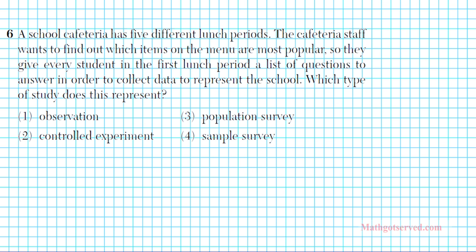In problem 6 it says the cafeteria has 5 different lunch periods. The cafeteria staff wants to find out which items on the menu are most important, so they give every student in the first lunch period a list of questions to answer in order to collect data to represent the school. Which type of study does this represent? This is a question on statistical studies.